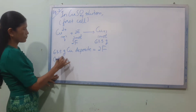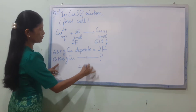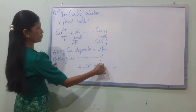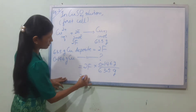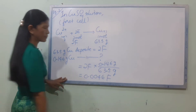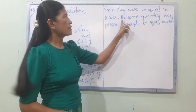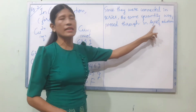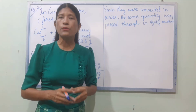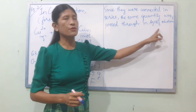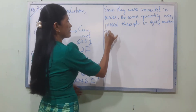With 0.146 grams of copper and molar mass 63.5 grams, calculating the number of Faradays passed. The result gives approximately 0.0046 Faradays of charge transferred through both cells.